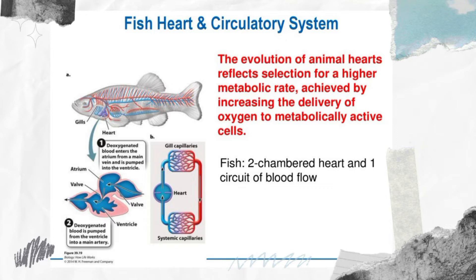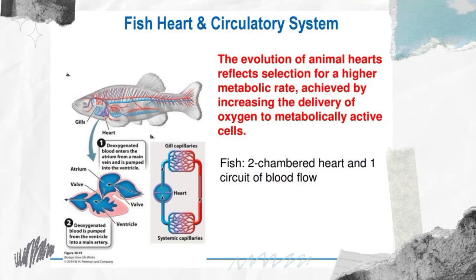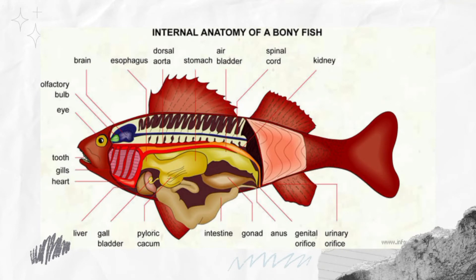The atrium has thick muscular walls and receives oxygen-depleted blood, then pumps it into the ventricle. The ventricle is the largest and most muscular chamber of the heart; when filled with blood, it constricts, forcing blood through the bulbus arteriosus into the ventral aorta. From there, blood flows to the gill filaments where it is oxygenated. Oxygenated blood flows from the gill filaments to the organs of the head and body, and a complex system of arteries, veins, and capillaries returns blood to the sinus venosus.